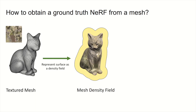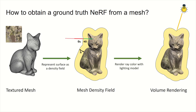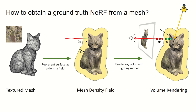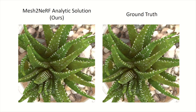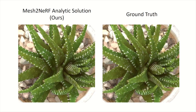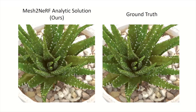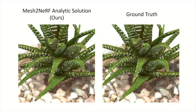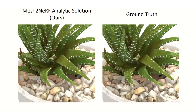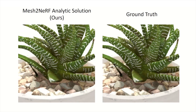We generate radiance fields directly from textured meshes, using an occupancy function to represent the density and a reflection function to determine the view-dependent ray color, where the defined density and color can be applied to volume rendering. Our Mesh2NRF analytic solution produces accurate renderings, suggesting that our theoretical derivation can be a reliable ground truth NERF representation from a mesh.